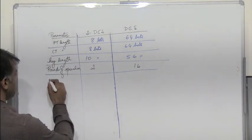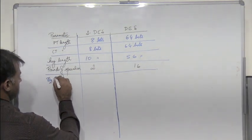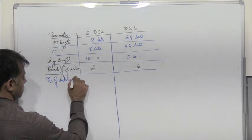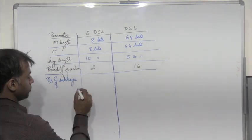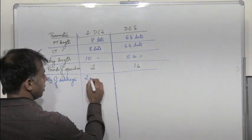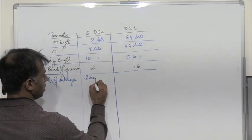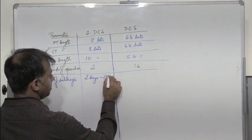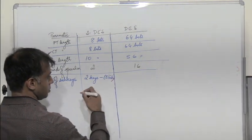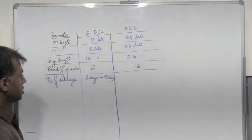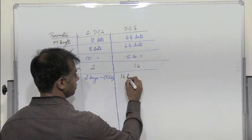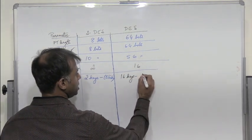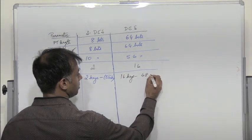Number of sub keys: 2 keys each of length 8 bits in S-DES. In DES we have 16 keys each of length 48 bits.